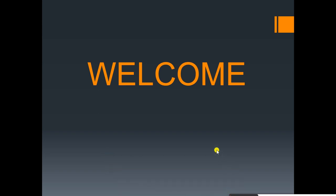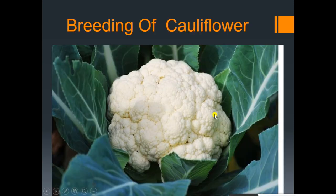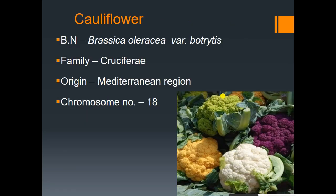Welcome. Today we will learn about the breeding of cauliflower. The cauliflower bud, also known as the curd of cauliflower. The botanical name is Brassica oleracea, family Cruciferae.